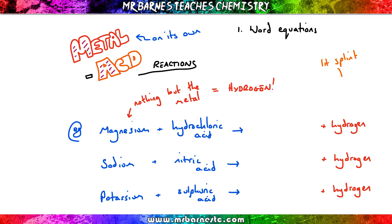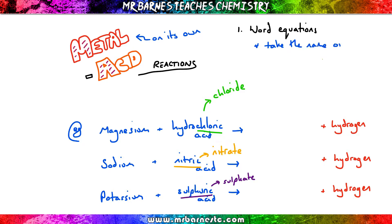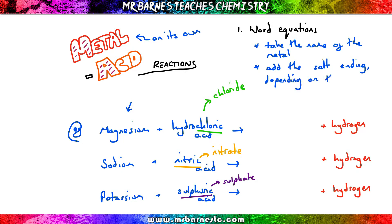The next thing you need to do is work out the actual name of the salt. You take your metal, react it with your acid, and you get a salt and hydrogen. There are three acids you'll be asked to know in the exam: hydrochloric acid gives you a chloride every single time; nitric acid gives you a nitrate; and sulfuric acid gives you a sulfate. You take the name of the metal and add that salt ending depending on what acid you've got.